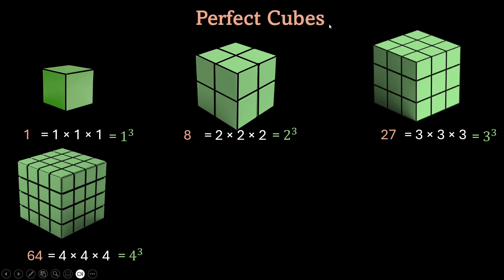There are many more perfect cubes. For example, 1, 8, 27, 64, 125 which is cube of 5, cube of 6, 7, cube of 8, cube of 9, cube of 10 which is 1000. All of these are perfect cubes.